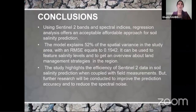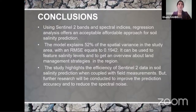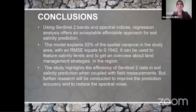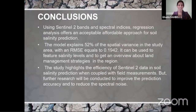In summary, using Sentinel-2 data coupled with regression analysis offers an acceptable, affordable approach for soil salinity prediction. The model explains 52% of spatial variance; the map can be used to assess salinity levels and land management strategies. This study highlights the efficiency of Sentinel-2 data in soil salinity prediction when coupled with field measurements. Further research will aim to improve model accuracy, reduce spectral noise and prediction error, and explore Sentinel-2 Level 2 and hyperspectral data for salinity prediction in the study area.